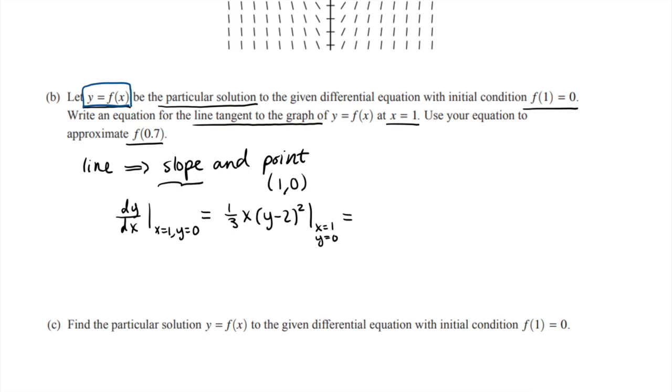And this gives us 1/3 times 1 times (0 - 2) all squared, so we've got negative 2 squared is 4 times 1/3, so 4/3 is our slope. And then when we know the slope and a point on the line, we can use our point-slope form of a line to get that we have y - y₁ equals the slope times (x - x₁), aka our line is y equals 4/3(x - 1), aka our line is y equals 4/3 x - 4/3.